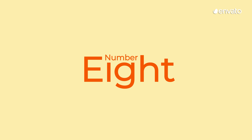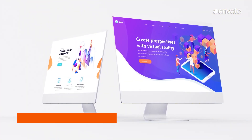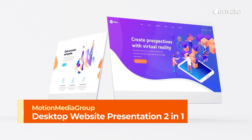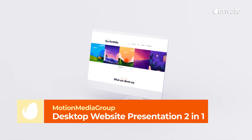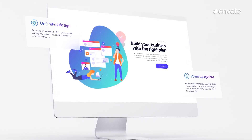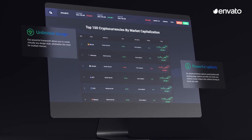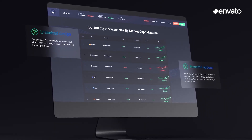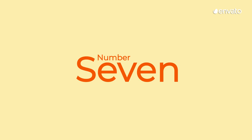Number 8 – Desktop Website Presentation 2-in-1 by Motion Media Group. 40 clean, simple scenes make up this minimalist-themed presentation template for After Effects. Both a dark and white version are included, and elements are easily editable.